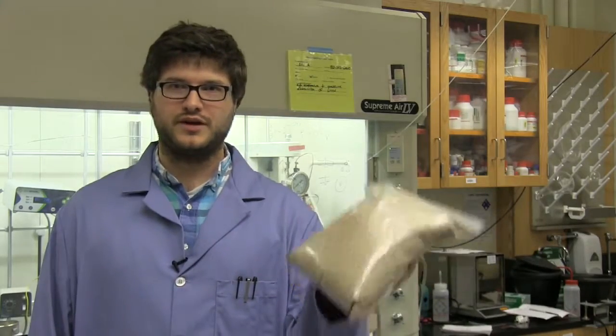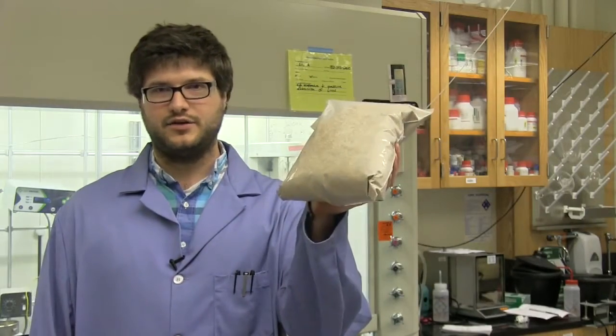So we use a lot of different varieties of biomass from trees to agricultural waste. This is about a kilogram of ground up corn stalk which was milled down to about two millimeters.